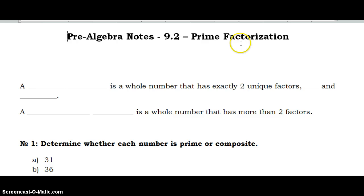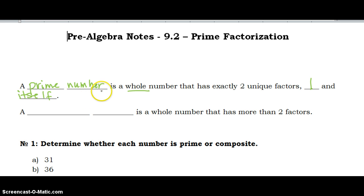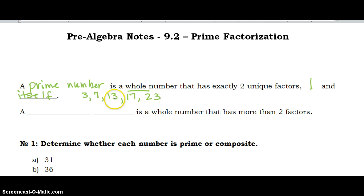Let's talk about prime factorization. A prime number is a whole number that has exactly two unique factors: one and itself. Some examples of prime numbers are 7, 3, 13, 17, and 23. Nothing else can be multiplied to give you that number except for itself and one.